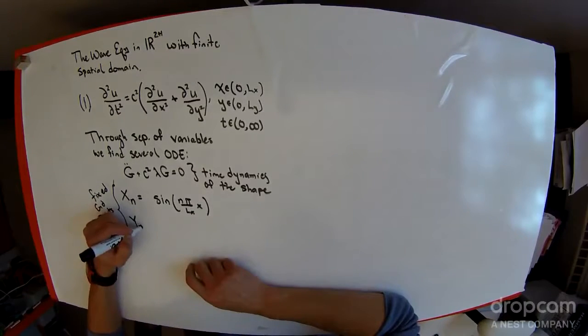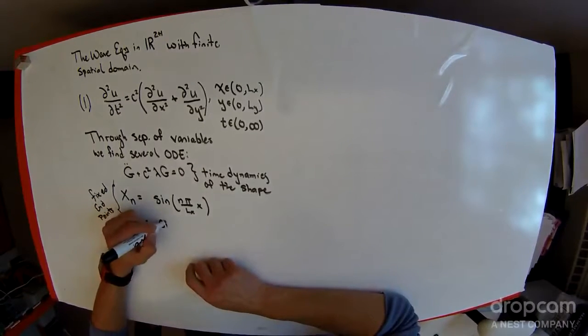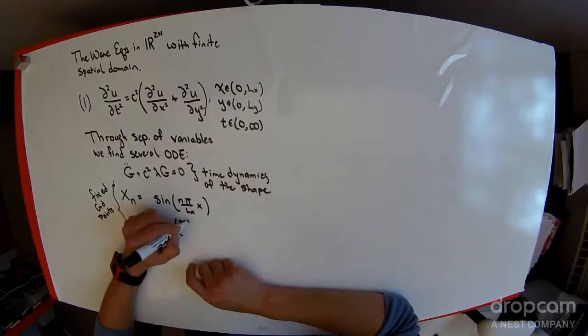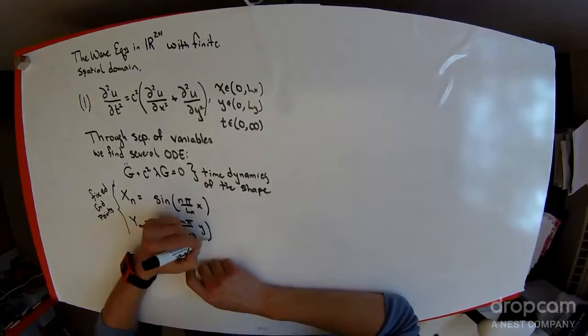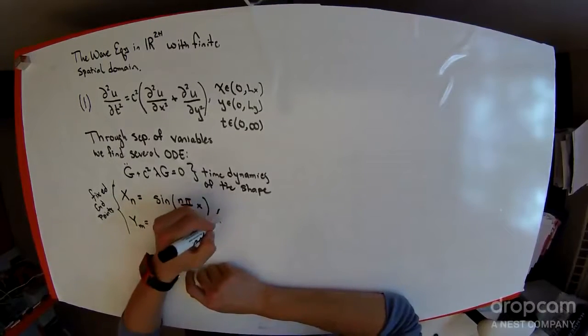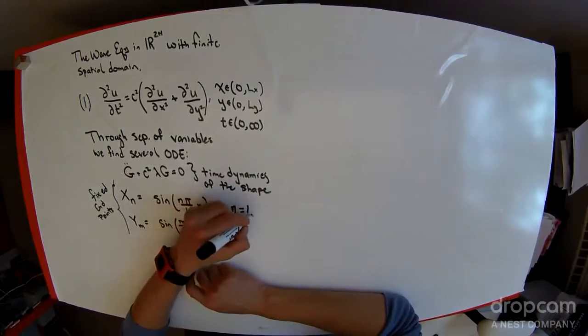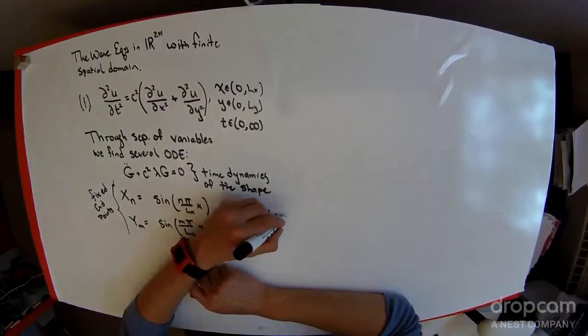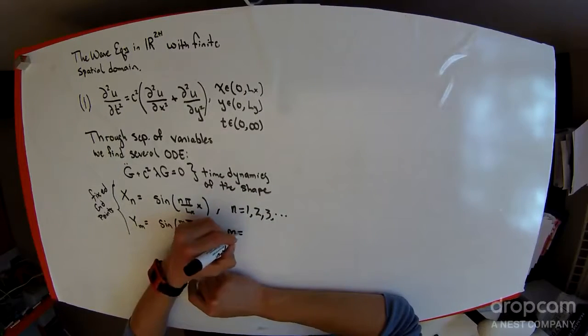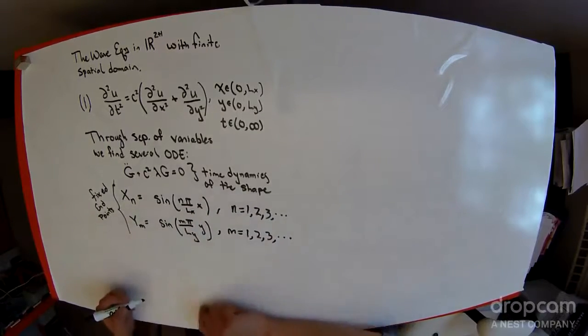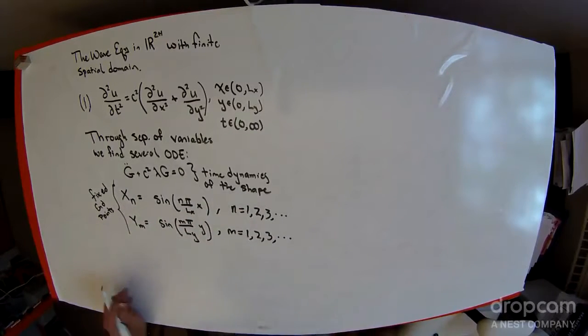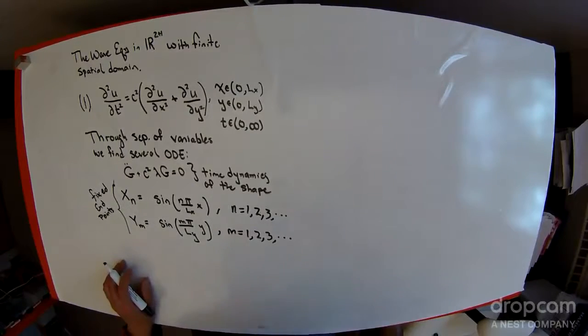And then you find kappa y of m is equal to the sine of m pi over L_y times y, where n goes from 1, 2, 3, all the way up to infinity, and so does m.